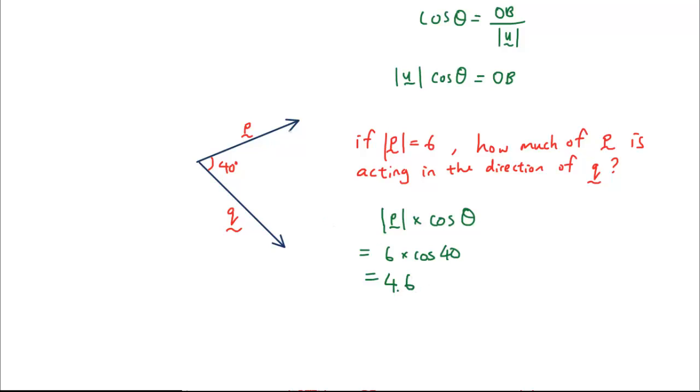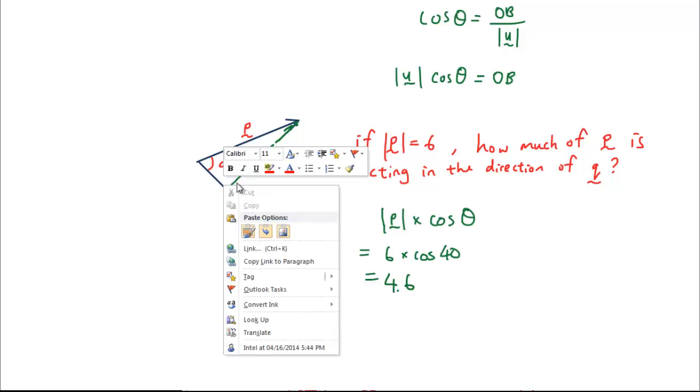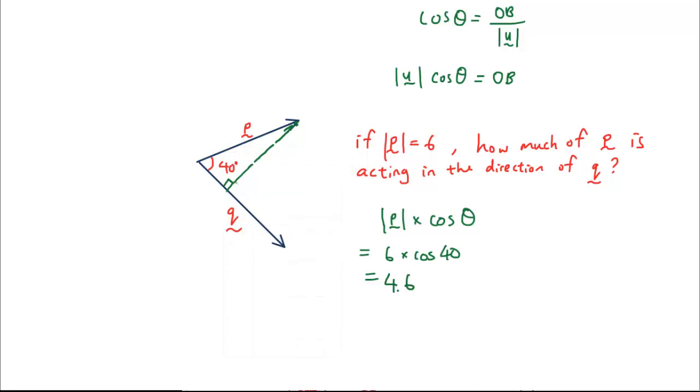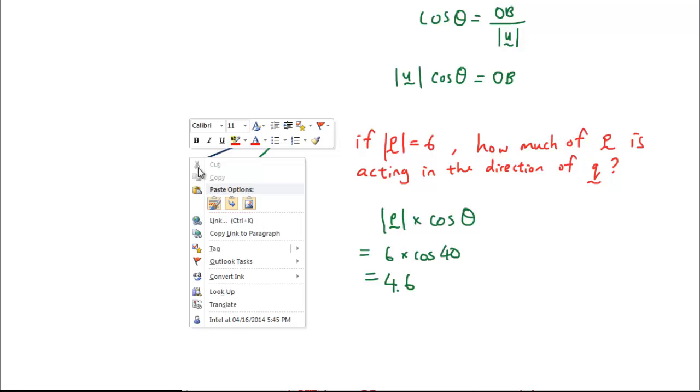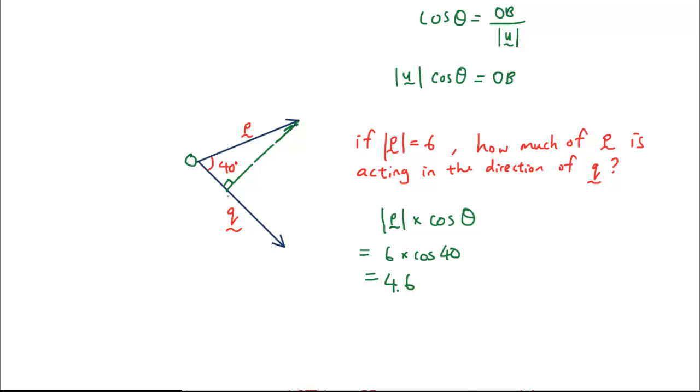So, if you imagine at right angles to q, if I draw a perpendicular line at right angles to q, that's joining p. The amount of vector p that's acting in the direction of q, so this length here, let's just call this p, op is equal to 4.6.